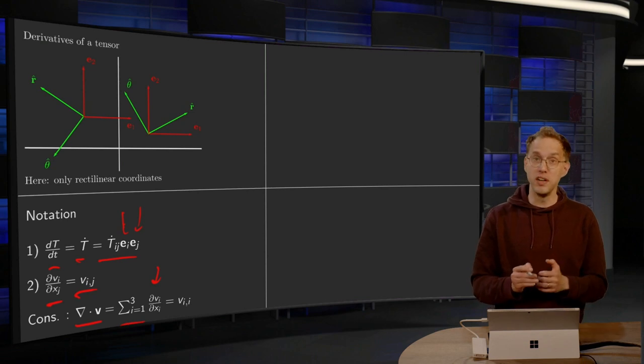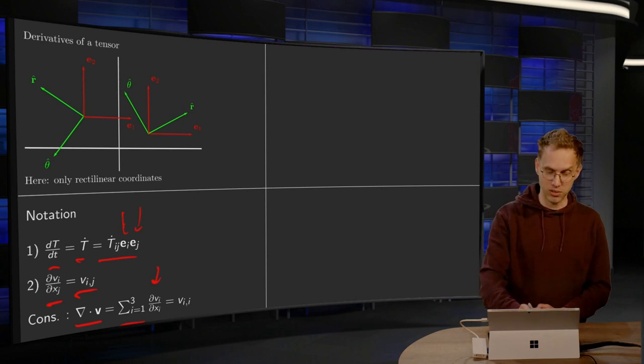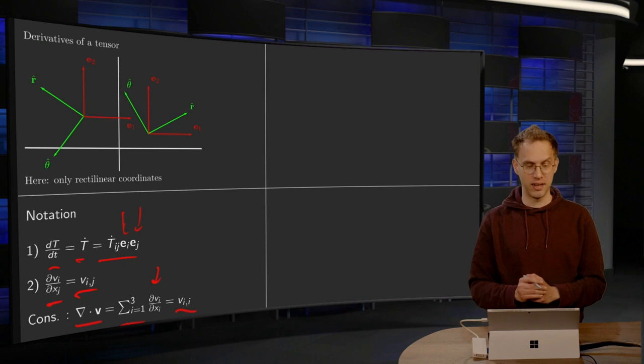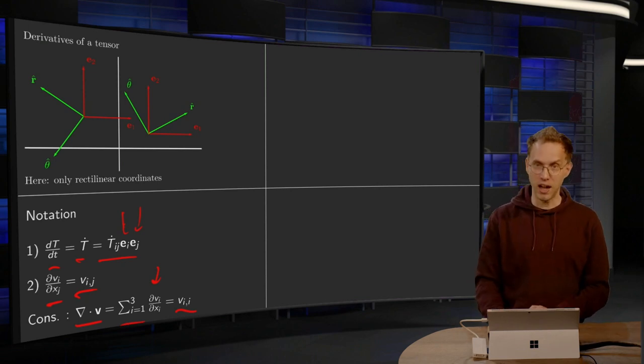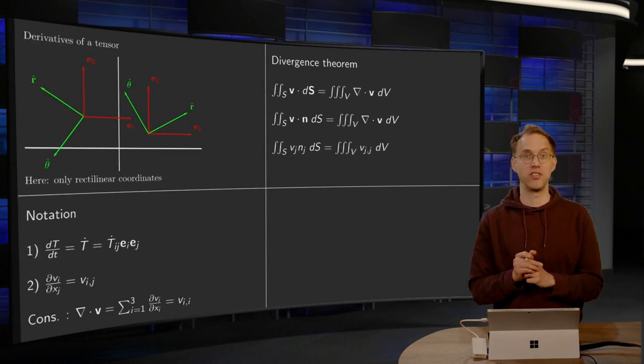And of course we can abbreviate this using our index notation as v_i,i. So the divergence of v can be abbreviated as v_i,i. And that's an abbreviation we are going to use in our divergence theorem.